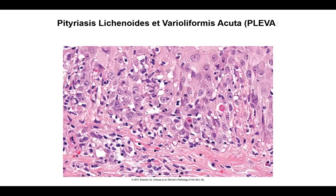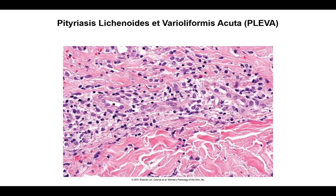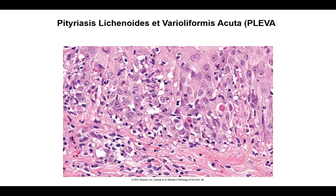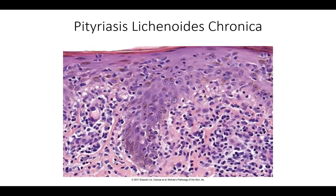PLEVA often shows perivascular lymphocytic inflammation and areas of extravasated red blood cells. As disease progresses from PLEVA to PLC, the inflammation diminishes. PLC still has key findings — parakeratosis, vacuolar or lichenoid interface change, dyskeratotic keratinocytes, and perivascular inflammation with extravasated red blood cells — but with less magnitude. Clinically, PLC lesions are not ulcerated, just scaly and flatter. On high power, PLC still shows a recognizable lymphocytic interface dermatitis.